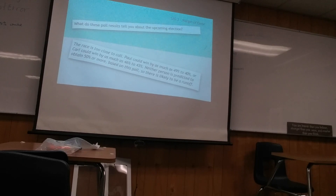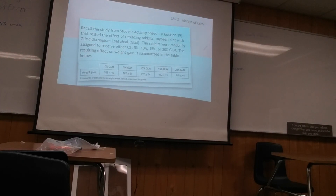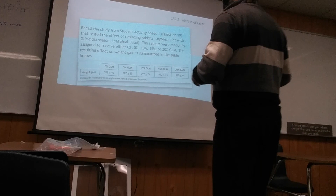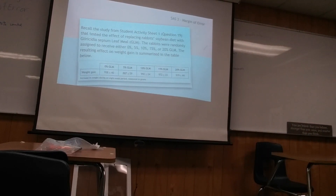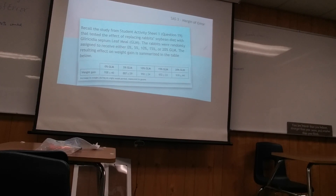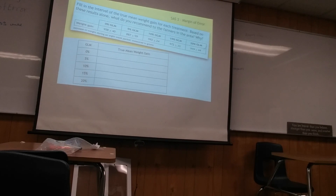Recall the study from Student Activity Sheet 1, Question 19, testing the effect of replacing rabbits' soybean diet with Gliricidia sepium leaf meal, or GLM. Rabbits were randomly assigned to receive 0%, 5%, 10%, 15%, or 20% GLM. For example, the 0% group gained 958 grams plus or minus 49.58, and the 5% group gained 887 grams plus or minus 59. Notice the margin of error is very large for the 5% group but very small for 10%, meaning we have greater accuracy in the 10% statistics.